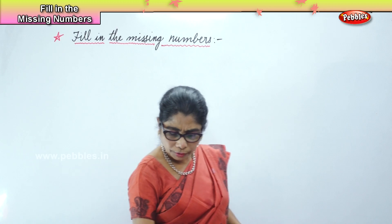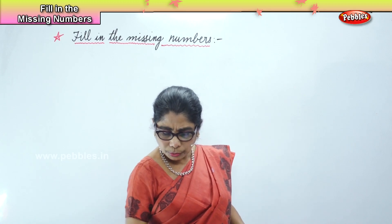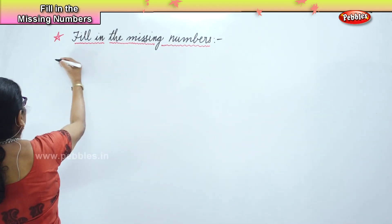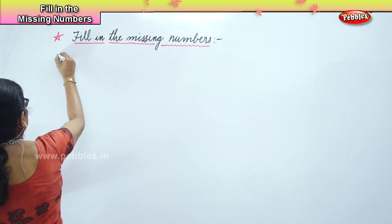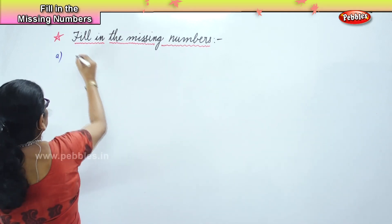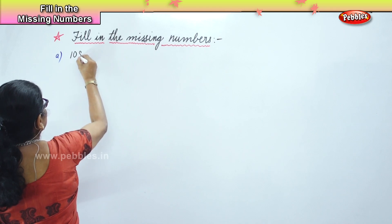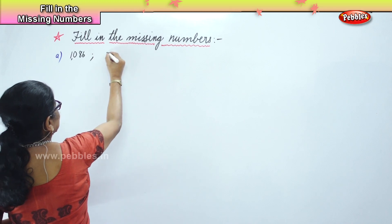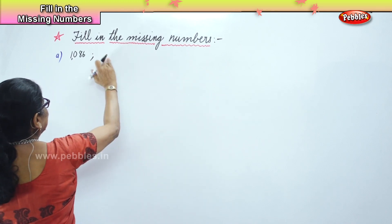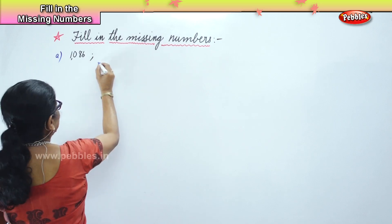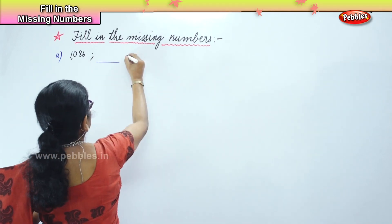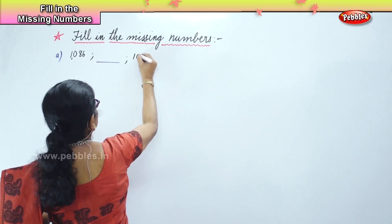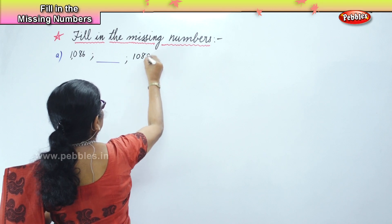Okay, now I will give you a whole lot of numbers and you will do fill-ups. Now, one thousand eighty-six — thousand eighty-six — then you fill in here, thousand eighty-eight.